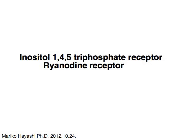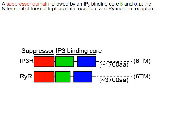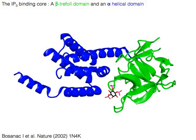Here I am going to show you the amino terminal fragment of IP3 receptor and the related ryanodine receptor amino terminal fragment. These are tetrameric cytoplasmic calcium channels with six transmembrane helices.